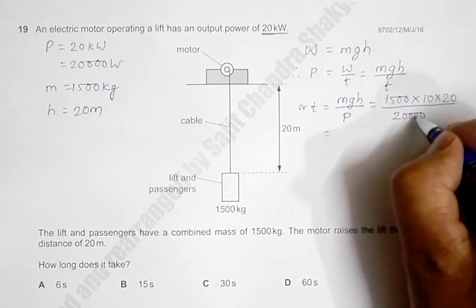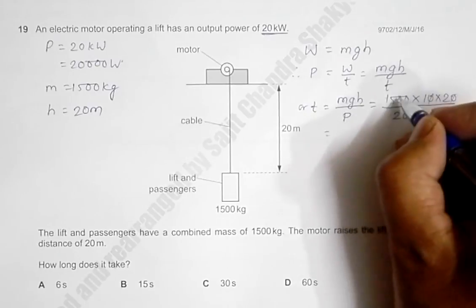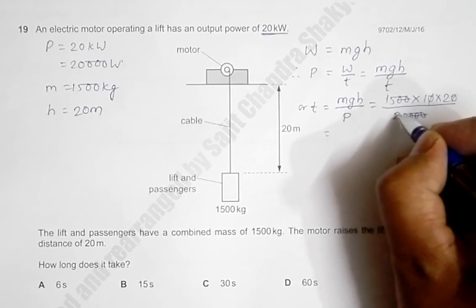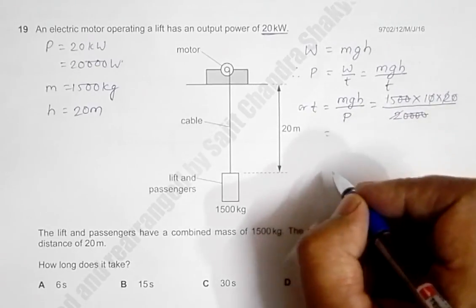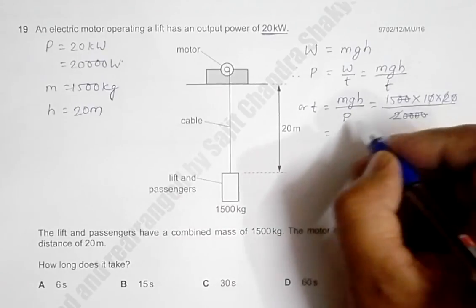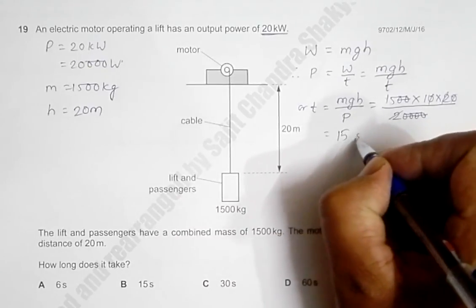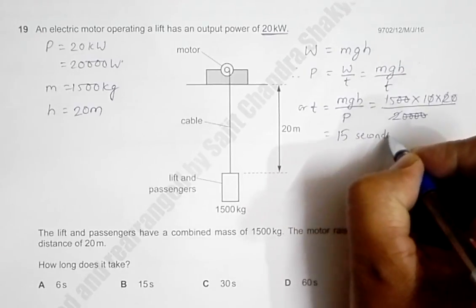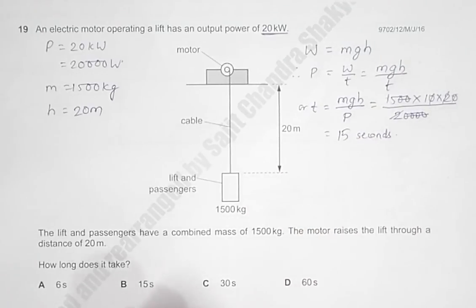If I do the thousands here, the zeros cancel. So the time is simply equal to 15 seconds, and the answer choice which resembles this is choice number B here.